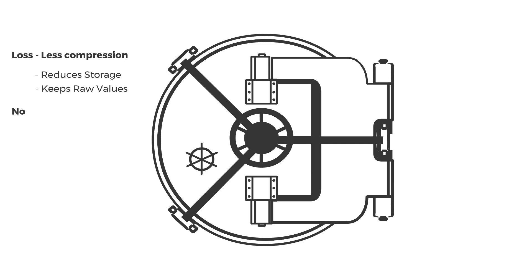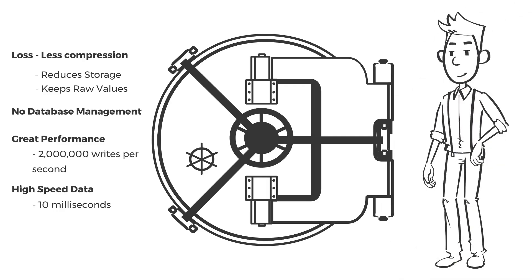Although most databases require ongoing management, Historian has been engineered to be maintenance-free and still provide high-speed performance. With speeds beyond 2 million writes and reads per second, Historian is up to any task, even high-speed data updating at 10 milliseconds.